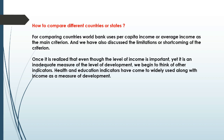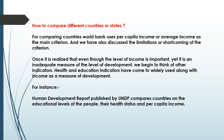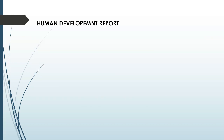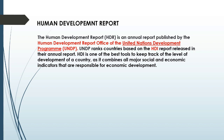Once it is realized that even though the level of income is important, it is an inadequate measure of the level of development, we begin to think of other indicators. Health and education indicators have come to be widely used along with income as measures for development. For instance, the Human Development Report published by UNDP compares countries on the educational level of the people, their health status, and per capita income. The Human Development Report is an annual report published by the Human Development Report Office of the United Nations Development Programme, that is UNDP.